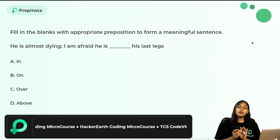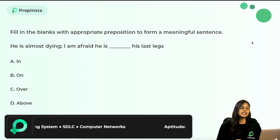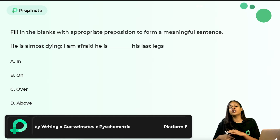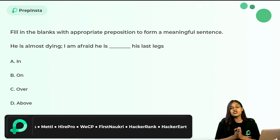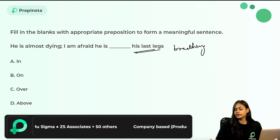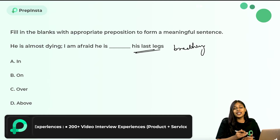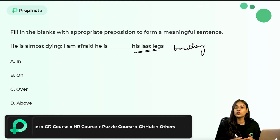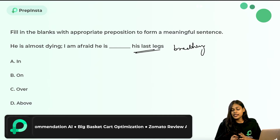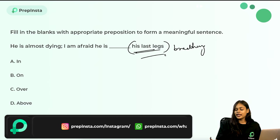Question: Fill in the blank with the appropriate preposition to form a meaningful sentence. 'He is almost dying — I am afraid he is ___ his last legs.' We are talking about a person who is on the verge of death. 'His last legs' does not literally mean he has one leg left — it means he has no more energy to continue his journey in life. The options are: in, on, over, above.